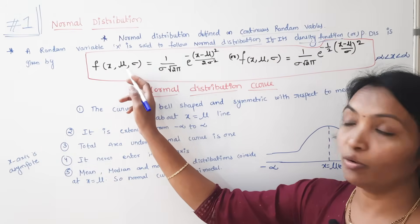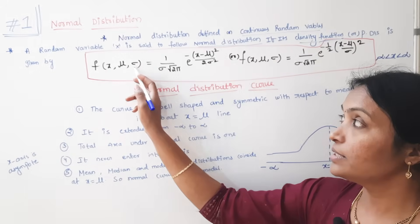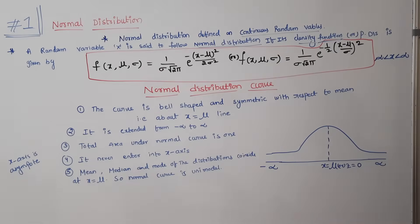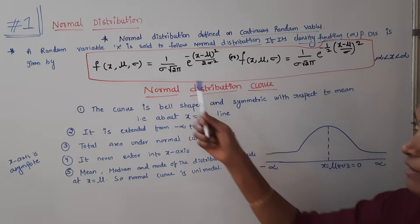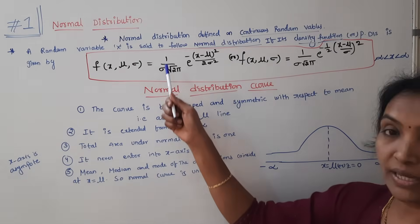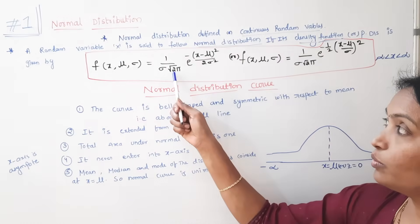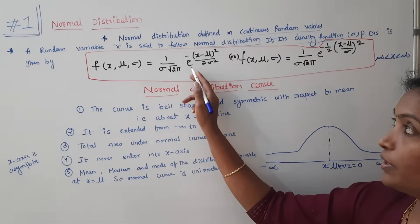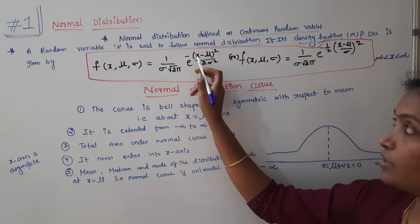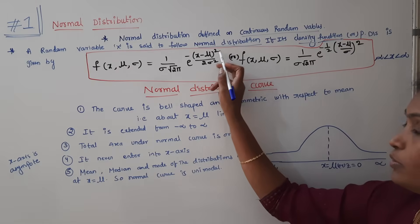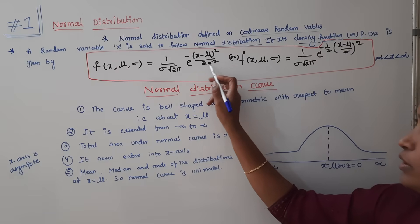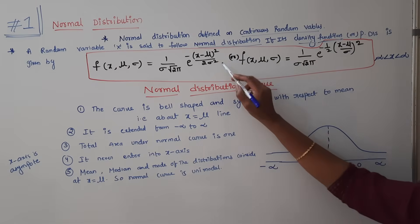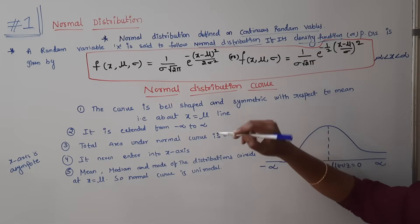The probability density function of the normal distribution is: f(x; μ, σ) = (1 / (σ √(2π))) × exp(−(x − μ)² / (2σ²)).